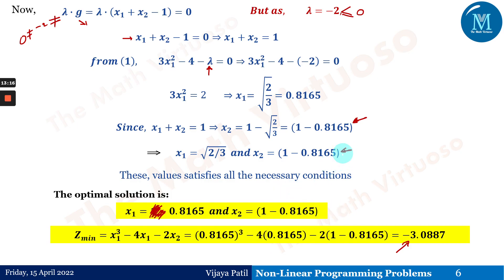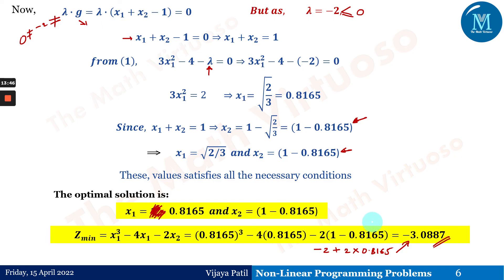Substituting x₁ = 0.8165 and x₂ = 0.1835 into Z = x₁³ − 4x₁ − 2x₂ gives Z_min = −3.0887. Lambda is already −2 which satisfies λ ≤ 0, so all KKT conditions are satisfied. This is the optimal solution for the minimization problem with one inequality constraint.